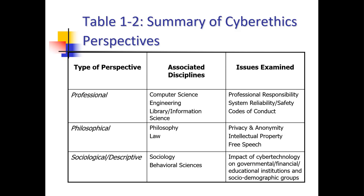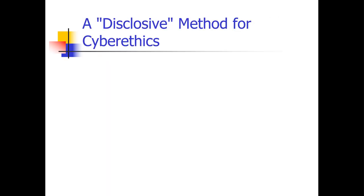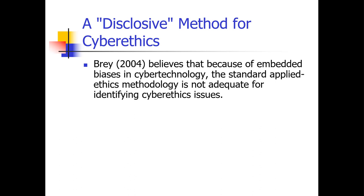So again, the types of perspectives are professional, philosophical, and sociological or descriptive — reflecting how we associate the different disciplines. Professional corresponds to fields like computer science or engineering. Philosophical corresponds more to law. Sociological or descriptive corresponds to sociology or behavioral science. We can look at cyber ethics from different perspectives based on the professional, philosophical, or sociological and descriptive viewpoint. There are multiple ways of looking at this — that's why we have to understand what cyber ethics is.